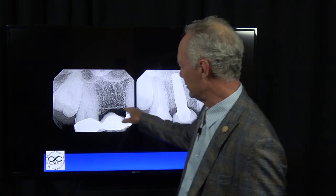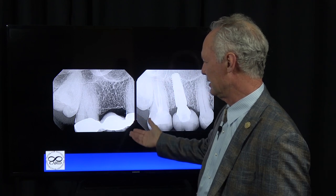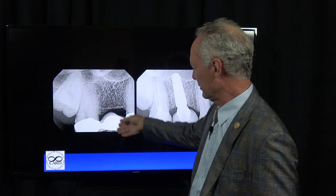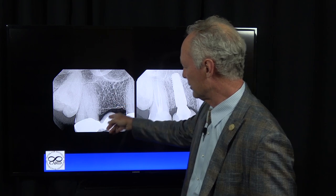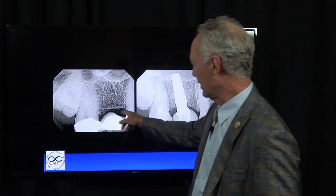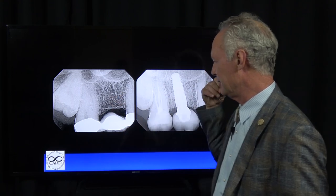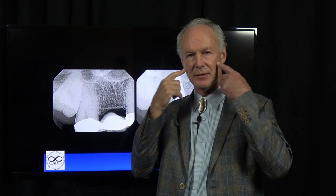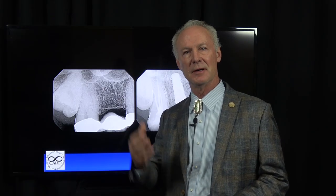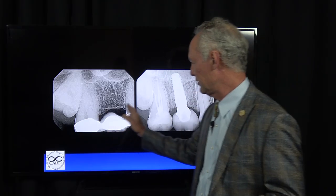With a fixed bridge, you have to floss under the bridge. Additionally, if you're just missing that one tooth, you have to prepare the adjacent teeth for the bridge to fit onto. So in general, if the missing tooth is not in the aesthetic zone — that's the upper anterior teeth, maybe back to the bicuspids — you generally prefer an implant because you don't have to floss underneath it and you don't have to prepare the teeth on either side.